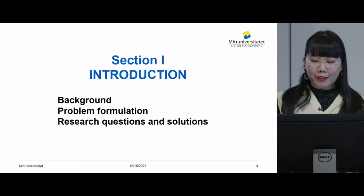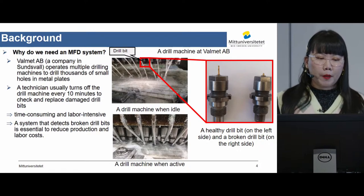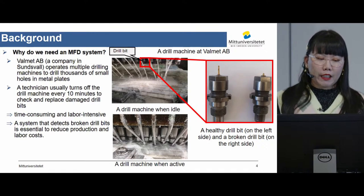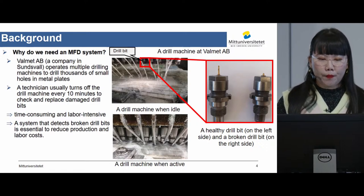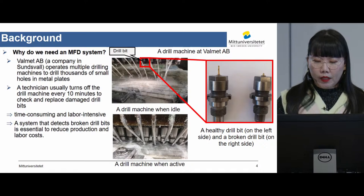Now I will talk about the introduction. Why do we need a machine failure detection system? From Valmet AB, a company in Surahammar, currently operating multiple drilling machines to drill thousands of small holes in metal plates — a technician usually turns off the drilling machine every 10 minutes to check and replace damaged drill bits. It is a time-consuming and labor-intensive process. Therefore, a system that can detect broken drill bits is essential to reduce production and labor costs. You can see the drilling machine in this image — idle and active states — with a healthy drill bit on the right and a broken drill bit shown here.